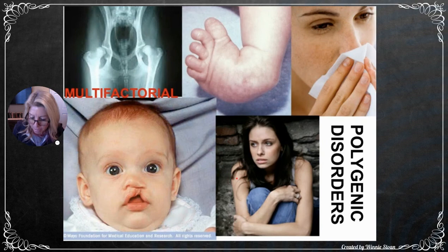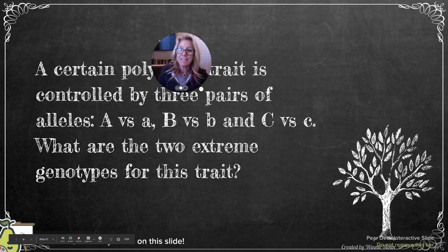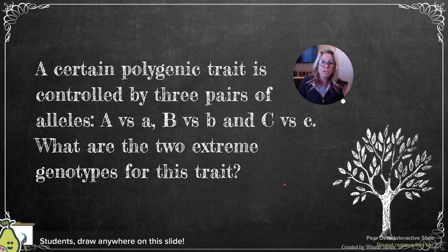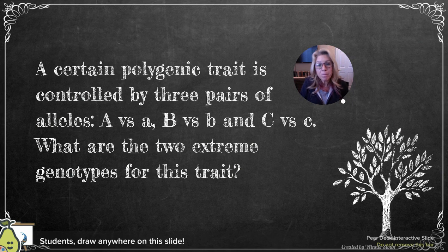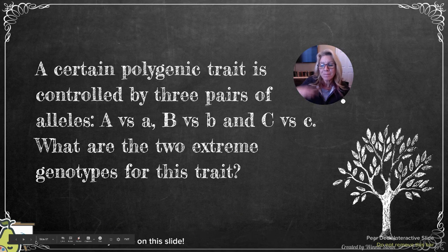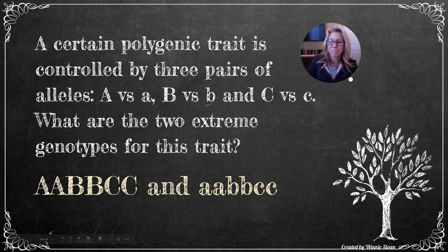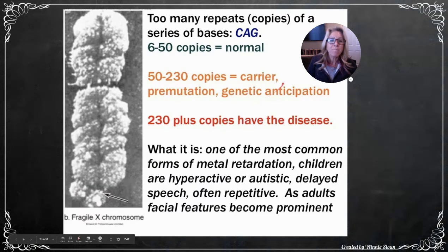Polygenic disorders influenced by environment include cleft lip, some forms of depression, and allergies. Practice problem: a polygenic trait controlled by three pairs of alleles — big A vs. little a, big B vs. little b, big C vs. little c. The two extreme genotypes would be fully homozygous dominant (AABBCC) and fully homozygous recessive (aabbcc).